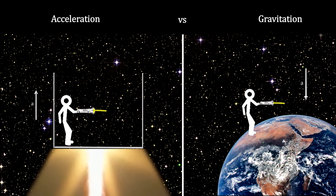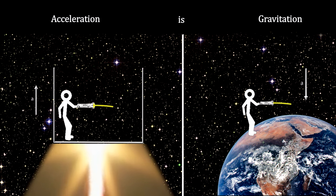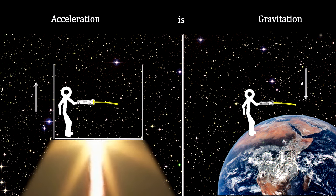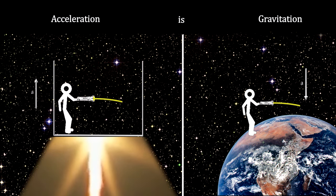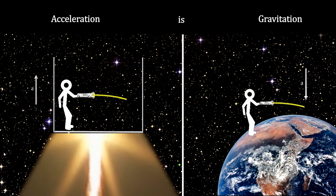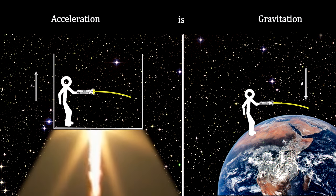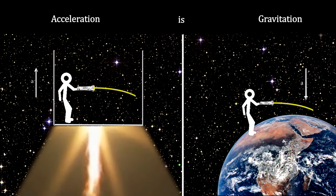Acceleration and gravitation are the same. And therefore, the mass associated with acceleration and the mass associated with gravitation will naturally be the same. Problem solved.